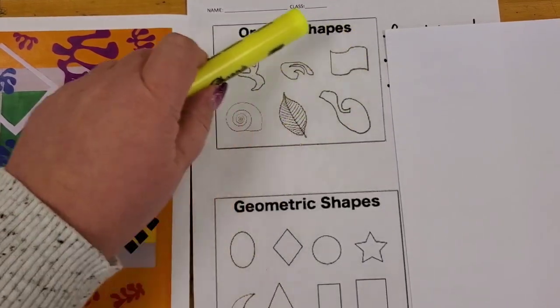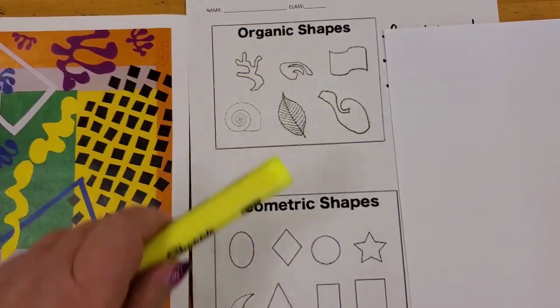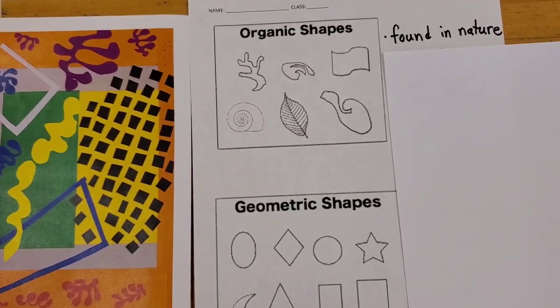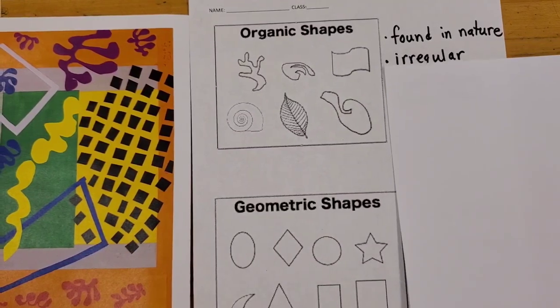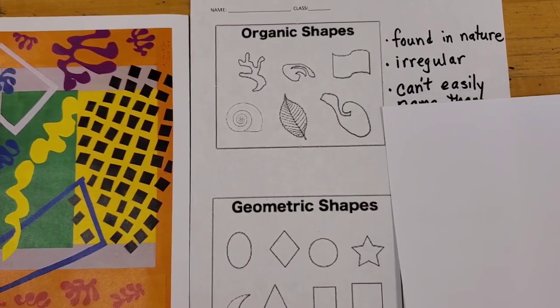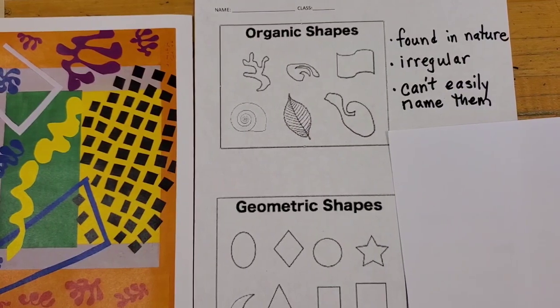If you take a look at this box and the shapes inside, those are considered organic shapes. Organic shapes are shapes found in nature. They are irregular and you can't easily name them.